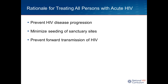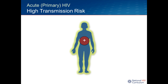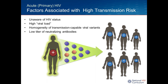Third, we want to prevent forward transmission of HIV from these individuals. People with acute HIV are very high risk of transmitting to others — we often call them super transmitters. Reasons include: they are unaware of their HIV status, they have a very high viral load, and they have essentially the founder virus early in their infection, which is the predominant virus circulating in their body — giving them homogeneity of transmission-capable viral variants. Very early on, they also have very low titers of neutralizing antibodies, which later may help minimize transmission slightly.